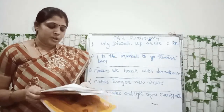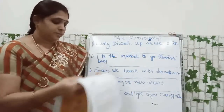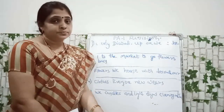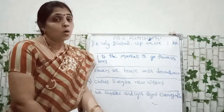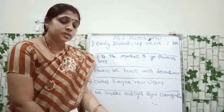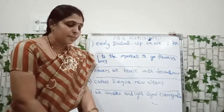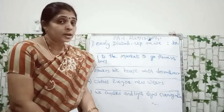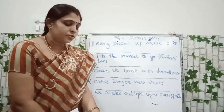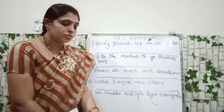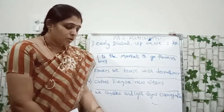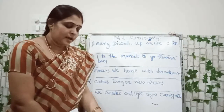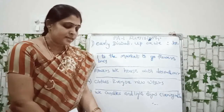One is done for you. See the example. First one: 'Early Diwali up on Diwali' — you have to write: We wake up early on Diwali. Next: 'I to the market to go flowers buy' — the answer is: I go to the market to buy flowers. Next: 'Flowers we house with decorate our' — We decorate our house with flowers. Next: 'Clothes everyone new ways' — Everyone gets new clothes. Next: 'We candles and light the house evening in the' — We light candles and the house in the evening.